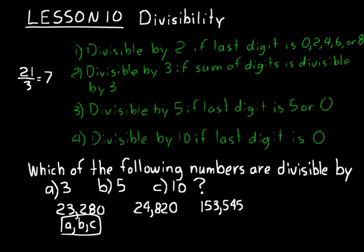So it's not divisible by 3, but it ends in a 0. And so that means it's going to be divisible by 5 and 10. So B and C would be answers for that one.